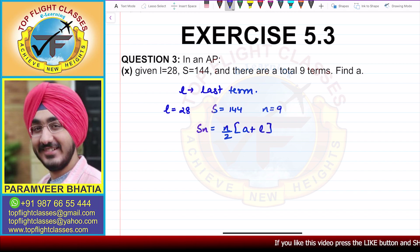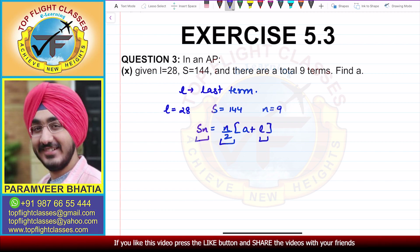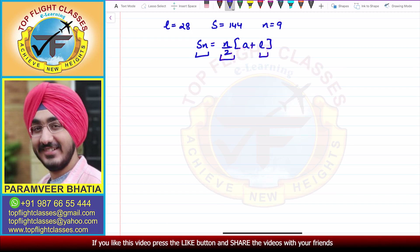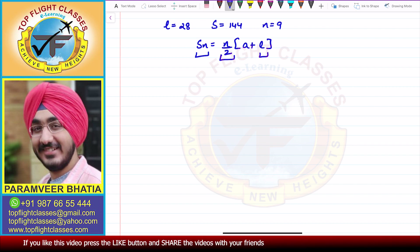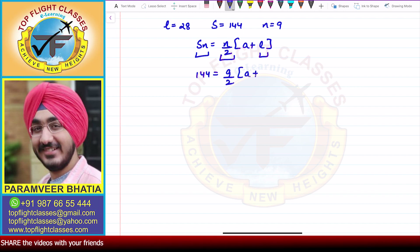Sn, in this case, is 144 given to you, N is given as 9, and L is given as 28. So if we put the values here, what we get is: Sn is 144, which is equal to 9 by 2 times A plus L, which is 28.